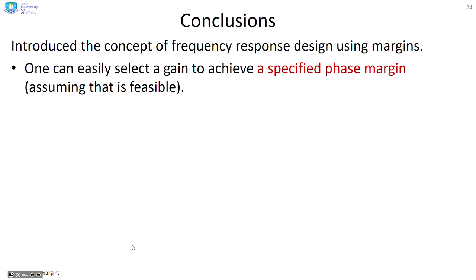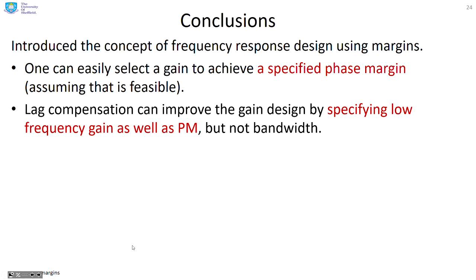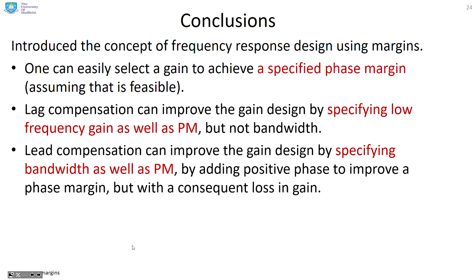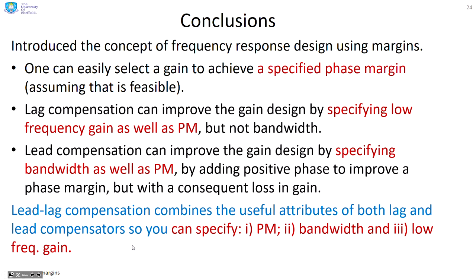In conclusion: we've introduced the concept of frequency response design using margins. A simple gain selection can achieve a desired phase margin. Lag compensation can improve the gain design by specifying low frequency gain as well as phase margin — two criteria, but no bandwidth control. Lead compensation can improve on the gain design by specifying bandwidth as well as phase margin, but without control over low frequency gain. Lead-lag compensation combines the useful attributes of both, allowing specification of phase margin, bandwidth, and low frequency gain — obviously within limits.